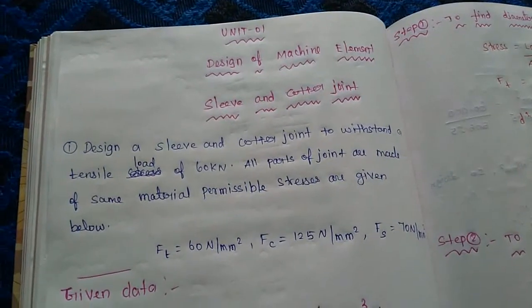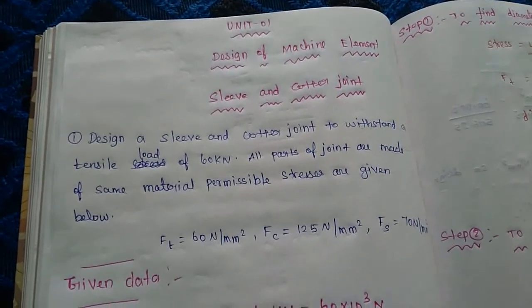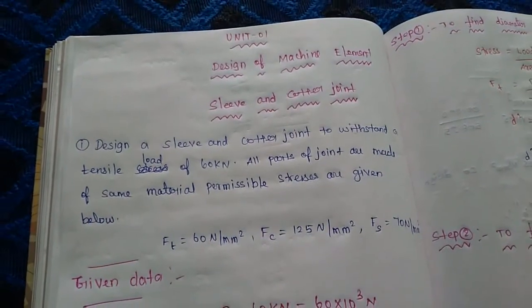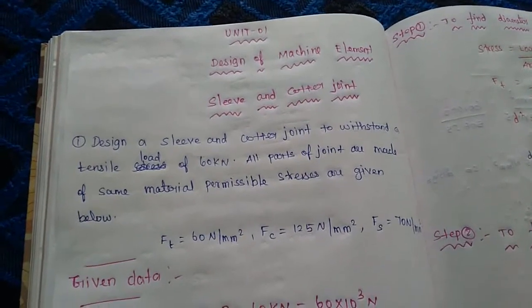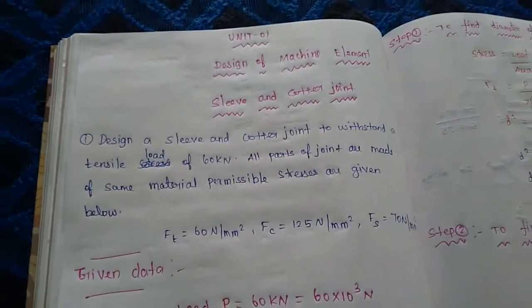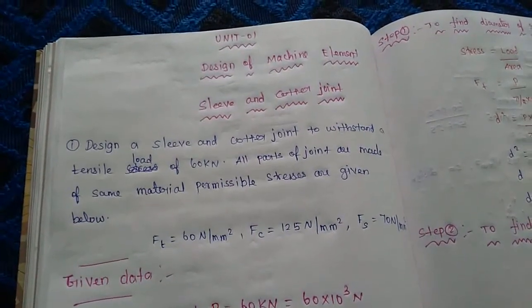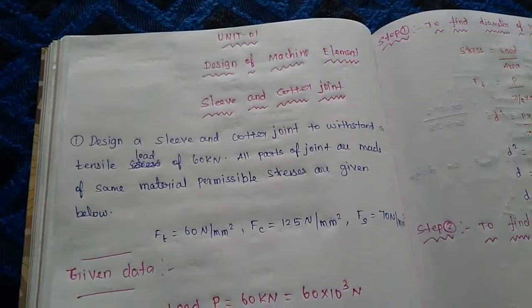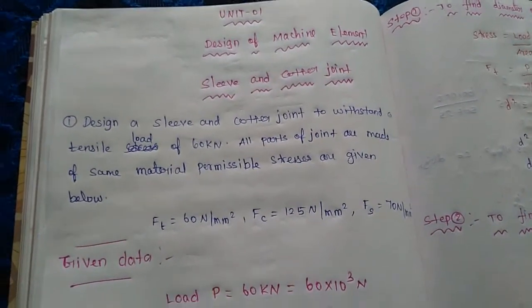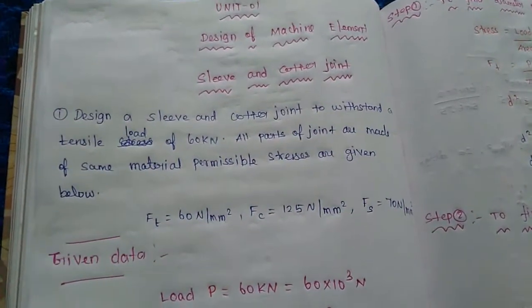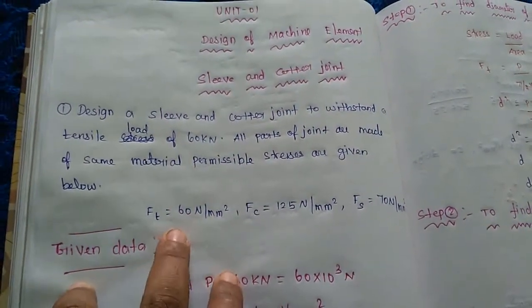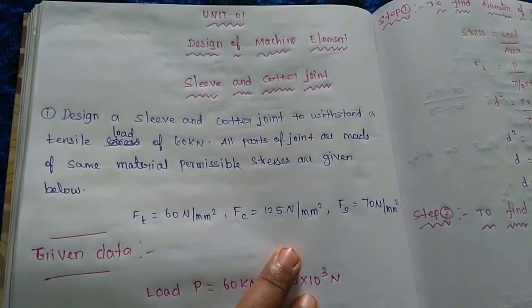Design a cotter joint to withstand a tensile load of 60 kN. All parts of the joint are made of the same material. Permissible stresses are given below: Ft (tensile stress) = 60 N/mm², Fc (compressive/crushing stress) = 125 N/mm², Fs (shear stress) = 70 N/mm². Given data is very important — always note the given data first.